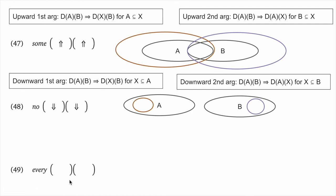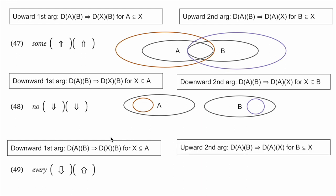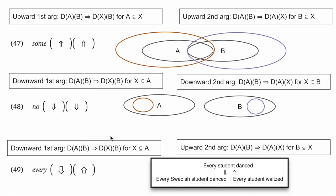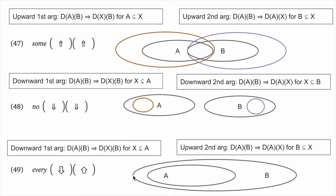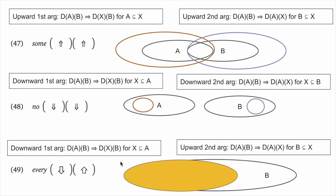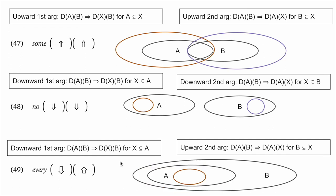Every is downward monotone on its first argument and upward on its second. 'Every student danced' entails 'every Swedish student danced' — a downward inference. And 'every student waltzed' entails 'every student danced' — upward on the second argument. The semantics begins with A subset B. Any subset of A will also be inside B, giving the downward inference. Upward doesn't hold for the first argument: we could expand A outside of B and destroy the subset relation. For the scope argument, we can expand B to any superset and A will still be contained, but we can't shrink B arbitrarily to a set disjoint from A.